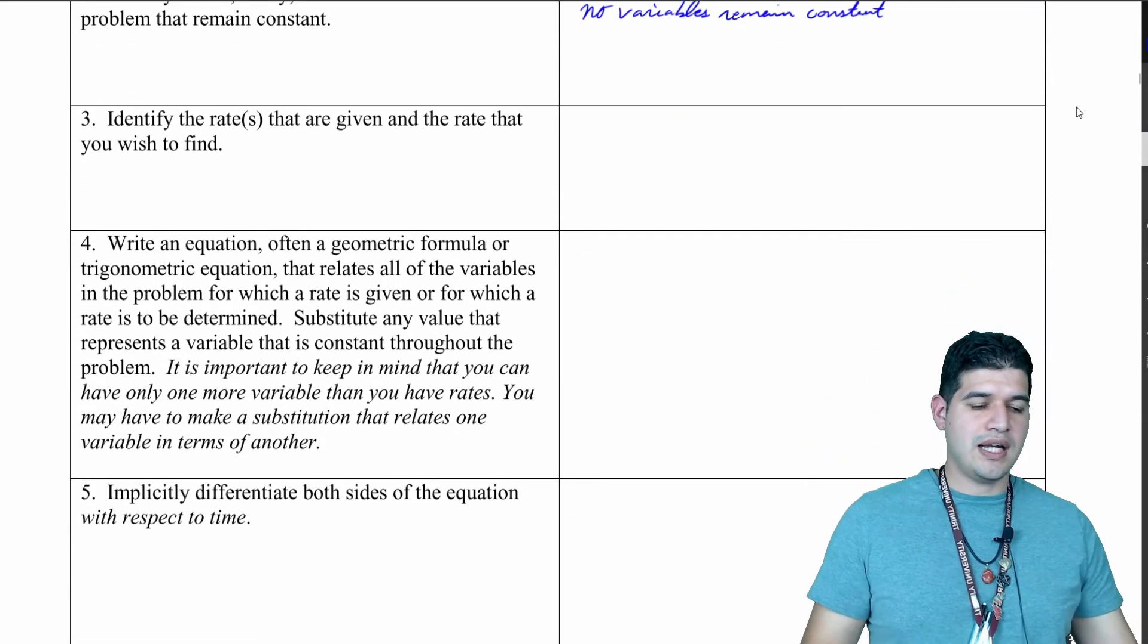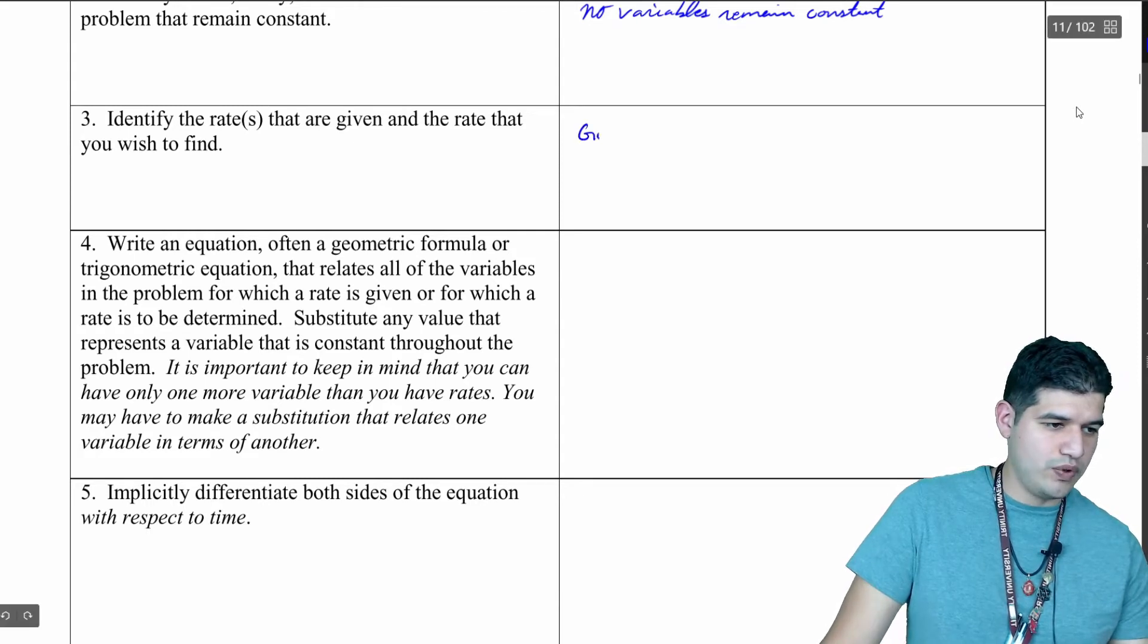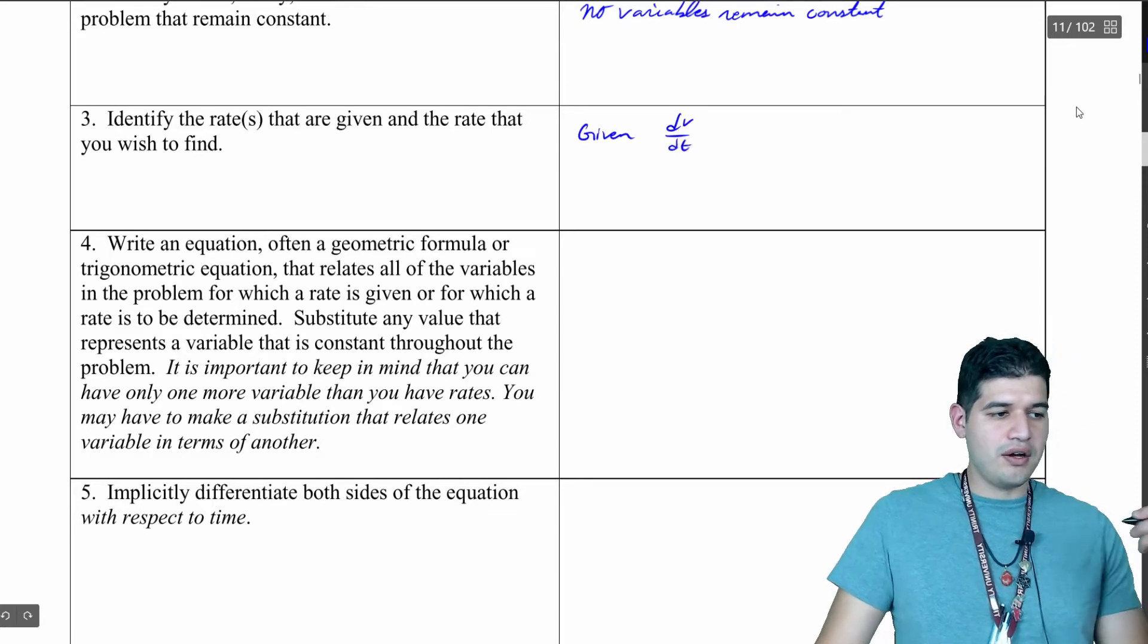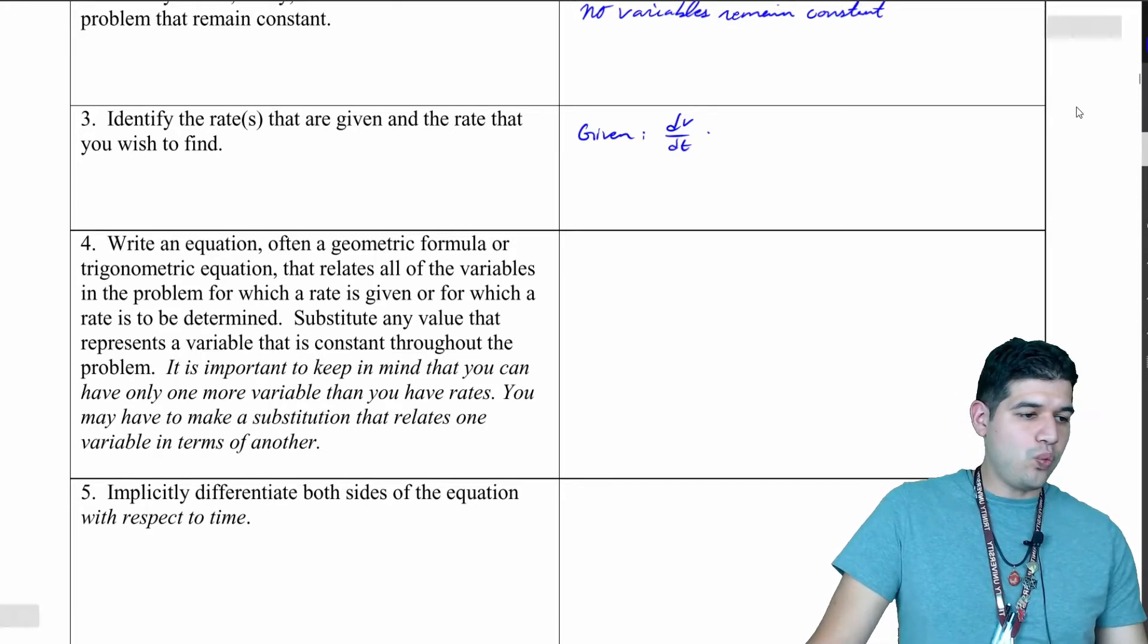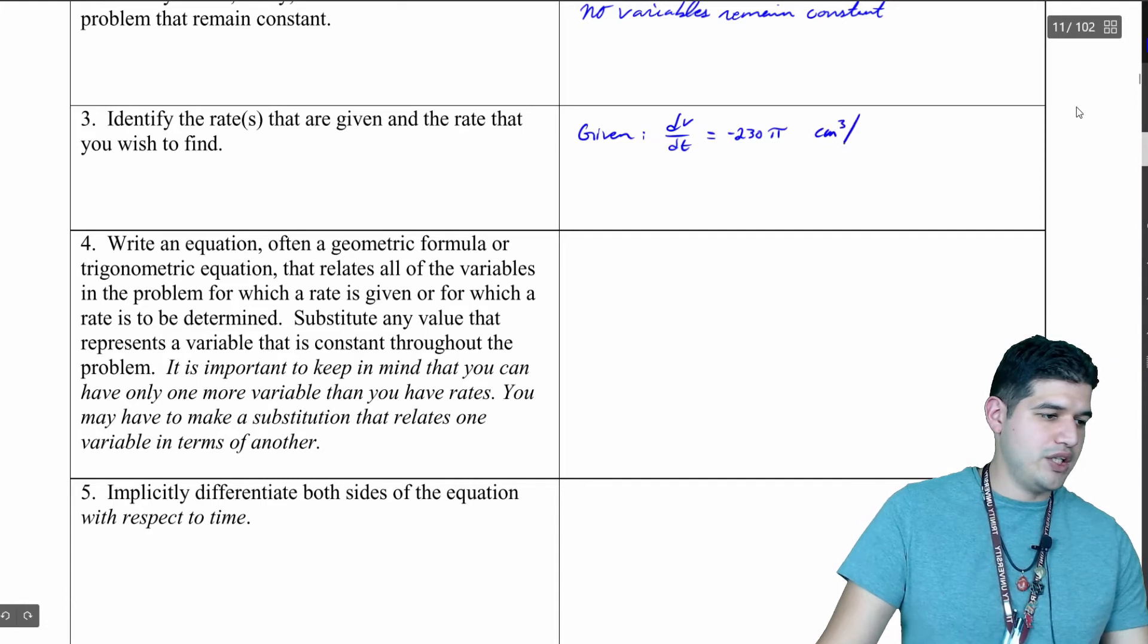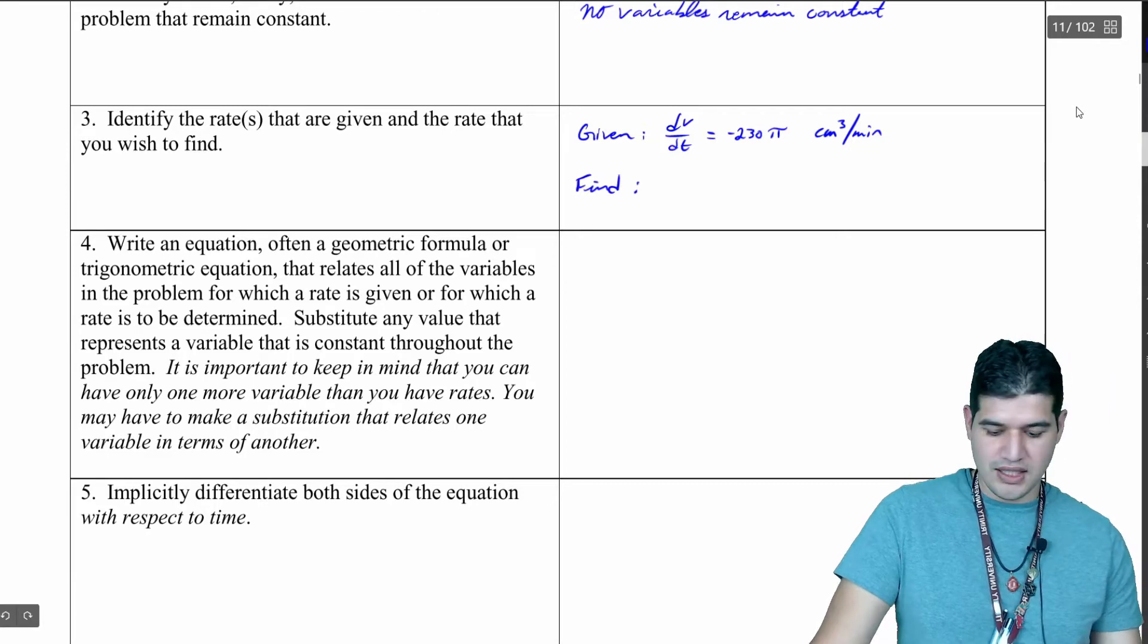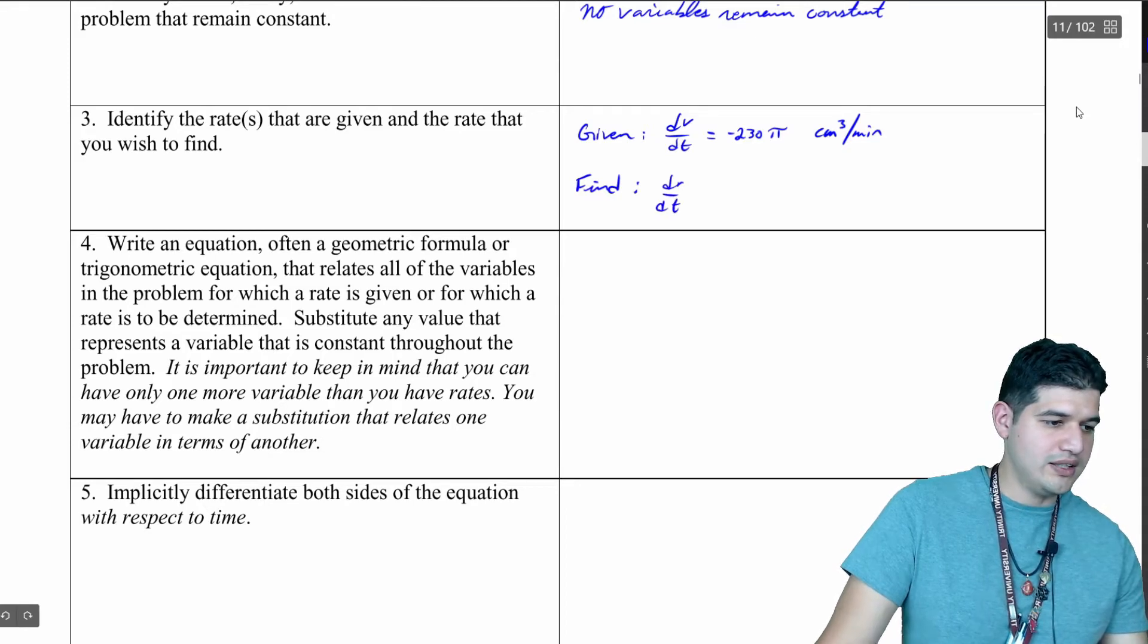Now we want to identify the rates that are given and what we want to find. We are given dV/dt, the change of the volume with respect to time. That was negative 230 pi cubic centimeters per minute. And it's asking us to find the change in the radius, dr/dt. That's what I need to find.